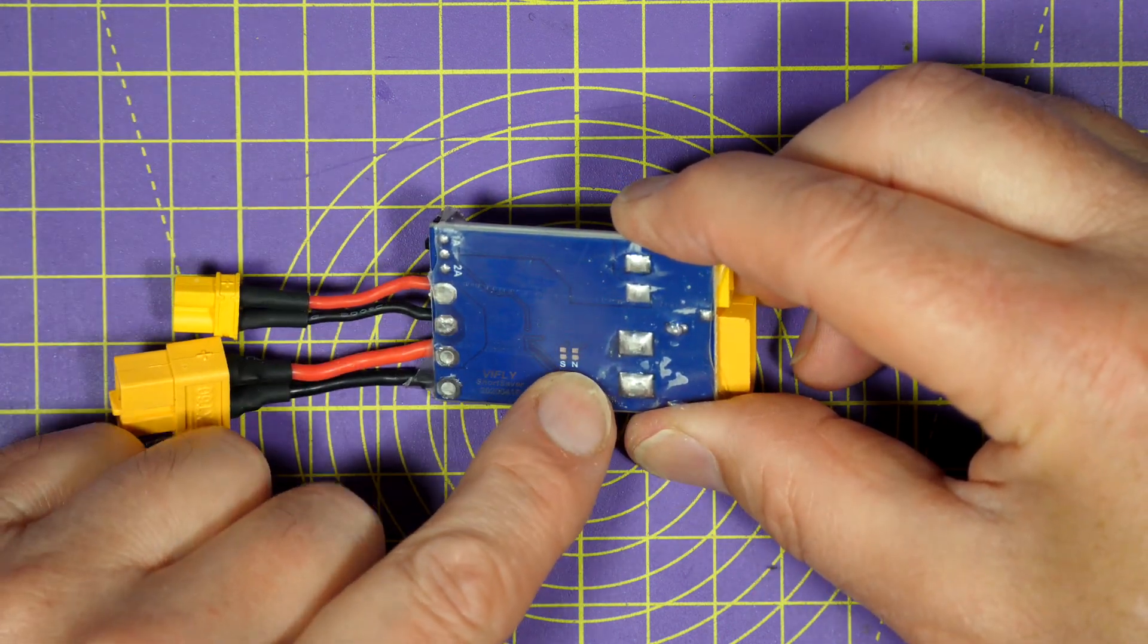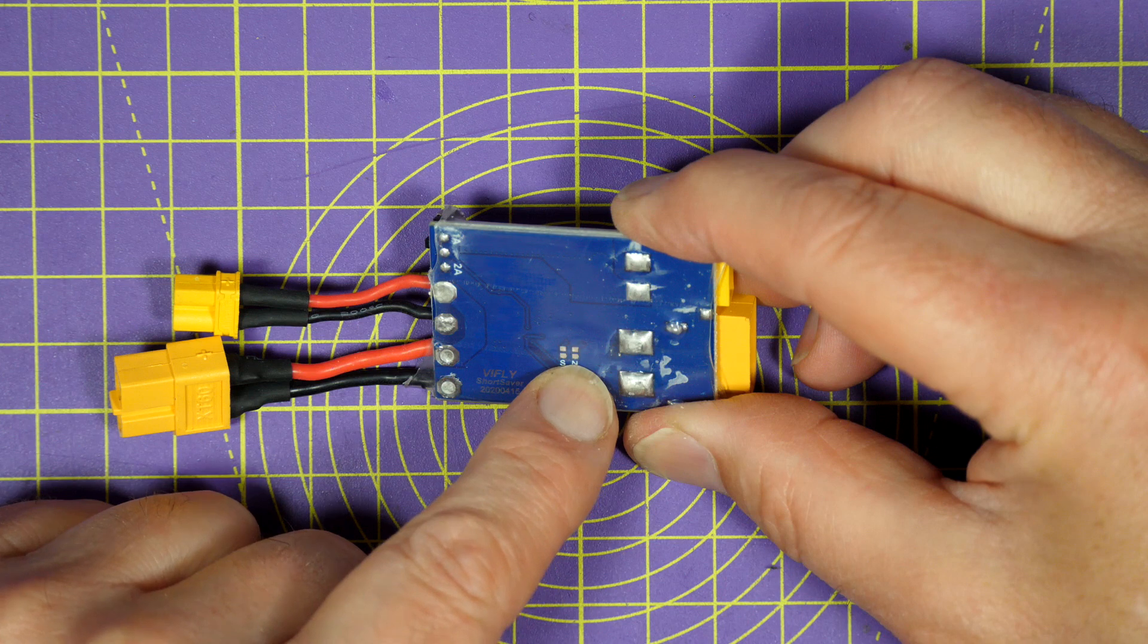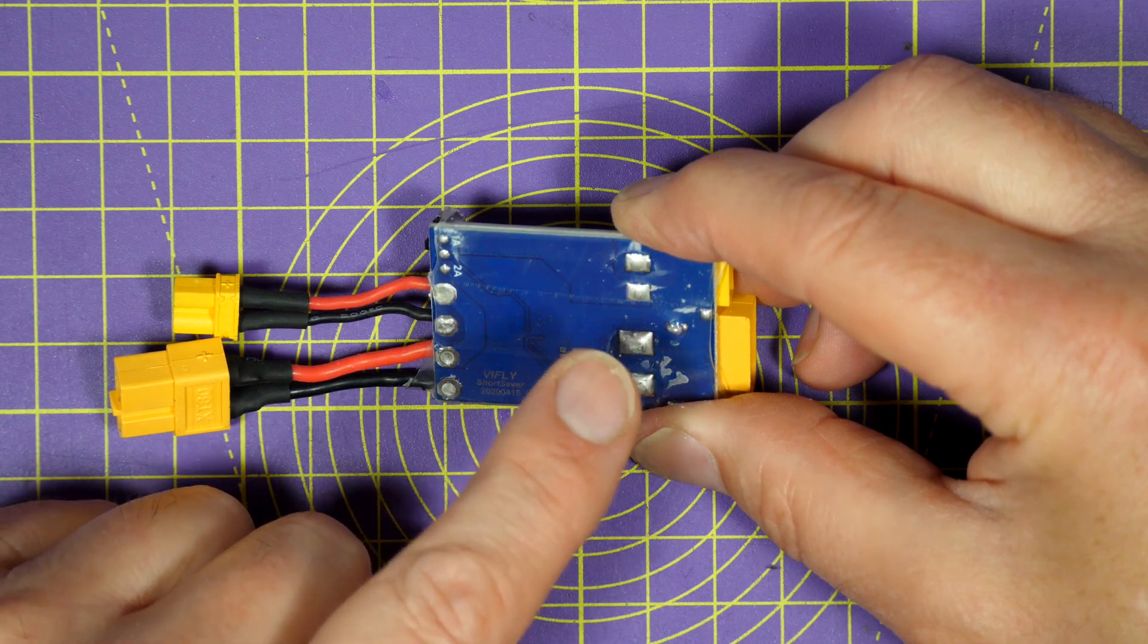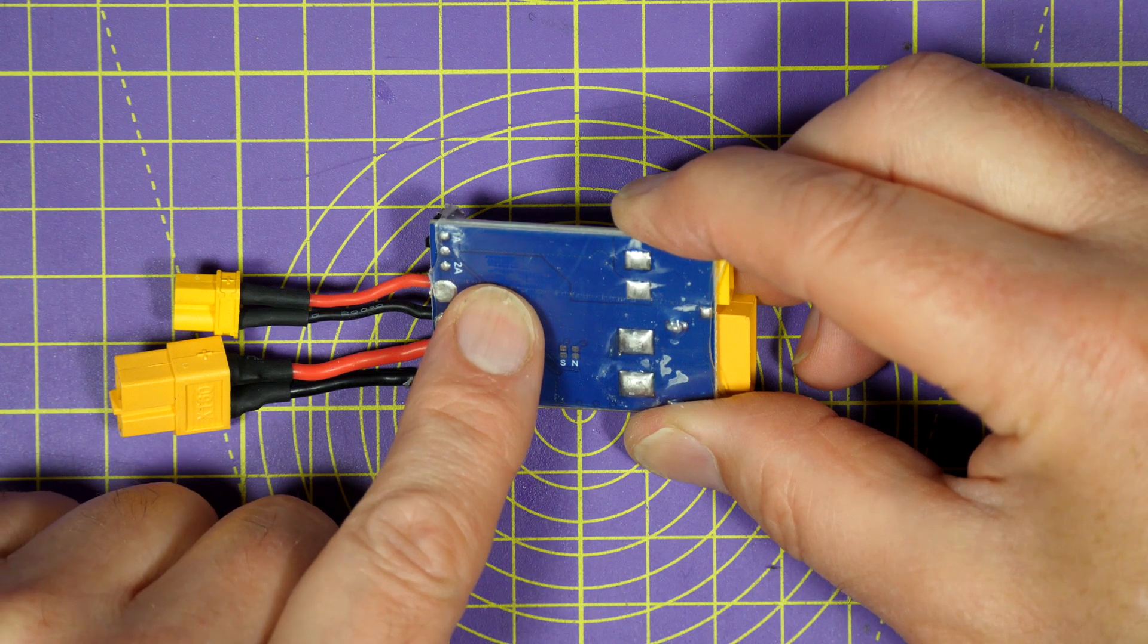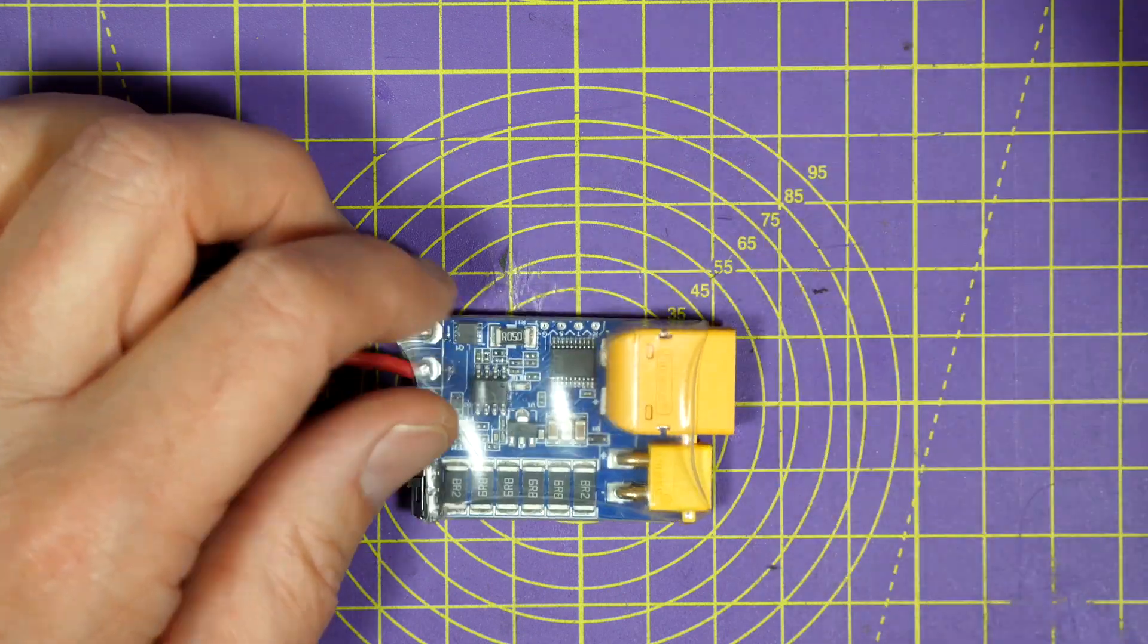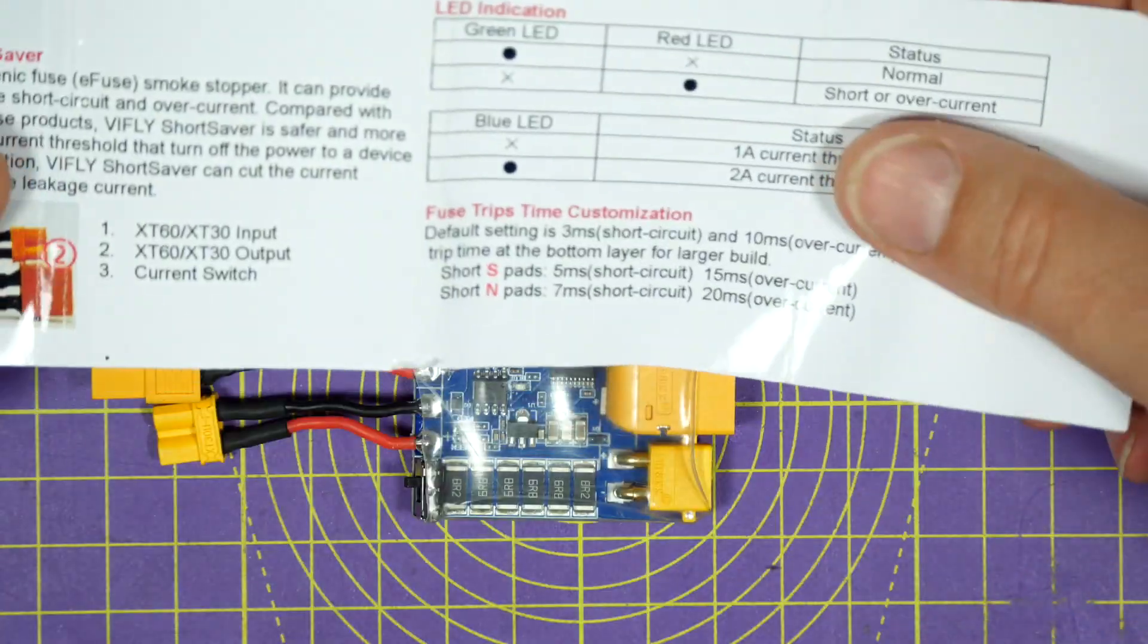I've been playing with it for a few days without any issues. And there's a couple of pads on the flip side of the PCB down here that you can use to change the response time of the board. By default it's 3ms but you can make it 5 or 7 with different combinations of shorts on these pads here.